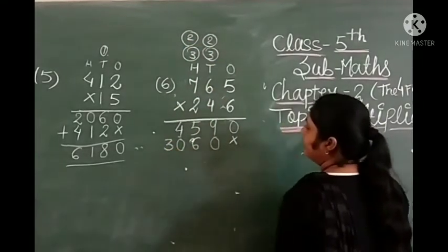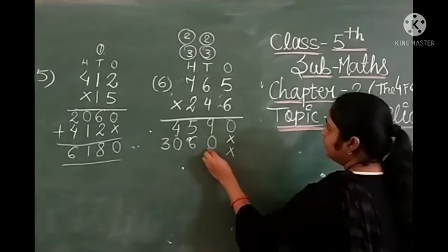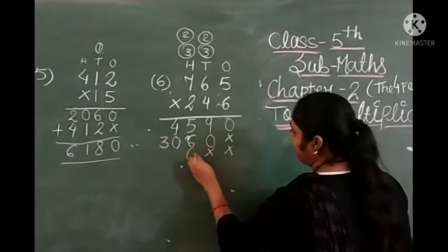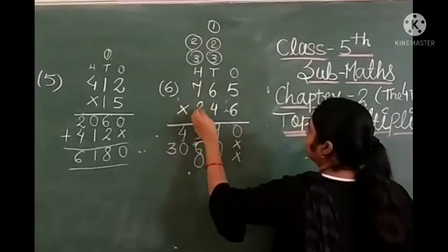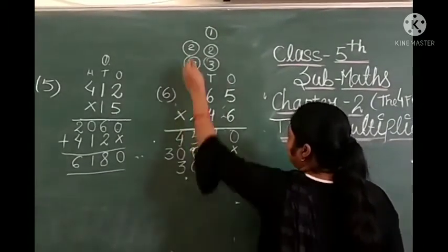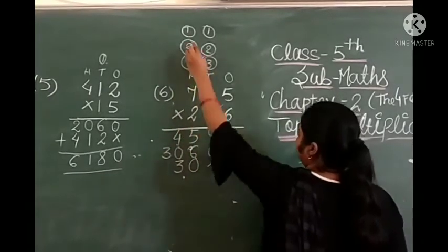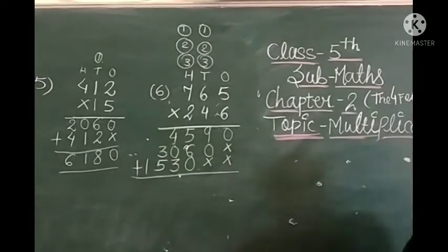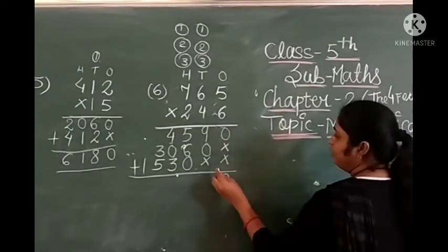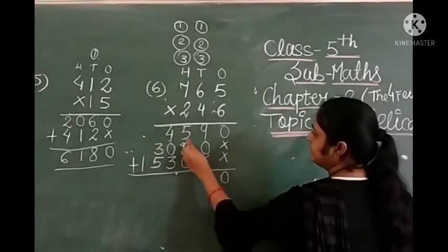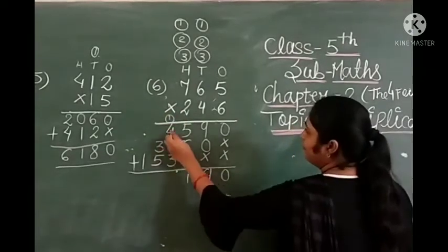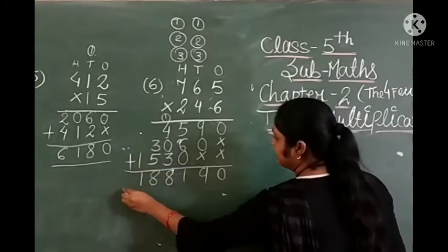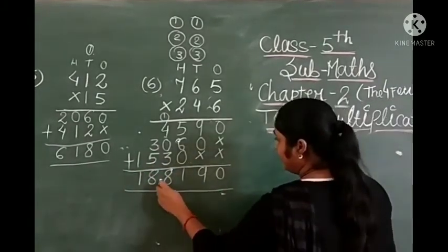We write 0 and 3 carries over. We put cross here and continue with the hundreds place calculations. Adding up all partial products: 2 fives are 10, carry 1. 2 sixes are 12 plus 1 is 13, carry 1. 2 sevens are 14 plus 1 is 15. We add all columns together to get our final answer.